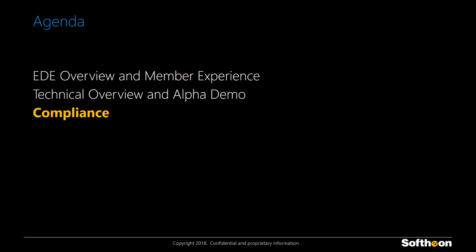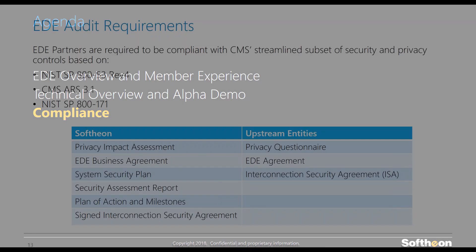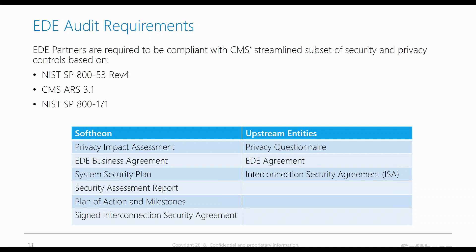The next topic we wanted to delve into is compliance. As an enhanced DE partner, Softeon will be required to be compliant with CMS's streamlined security and privacy controls based on the National Institute of Standards and Technology, NIST, Special Publication 800-53, Revision 4, Moderate Baseline Controls. This NIST publication creates and promotes the standards used by federal agencies to implement the Federal Information Security Management Act (FISMA). Softeon will be responsible for submitting to CMS: a privacy impact assessment, a fully executed EDE business agreement, a system security plan, a security assessment report produced by an independent third-party assessor, a plan of action and milestones, and a signed interconnection security agreement.